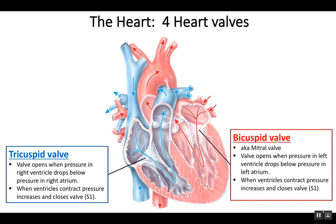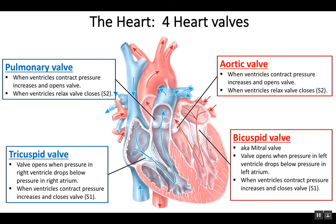The dub — the second heart sound — is due to closing of the semilunar valves: the pulmonary and aortic valve. These valves are named based on where the blood is going. If it's going pulmonary, it goes through the pulmonary valve; if it's going to the aorta, it goes through the aortic valve. These valves open when pressure in the ventricle exceeds the pressure on the other side of the valve, and they close when ventricular pressure drops below the pressure on the other side, producing the S2 heart sound — the dub after the lub.